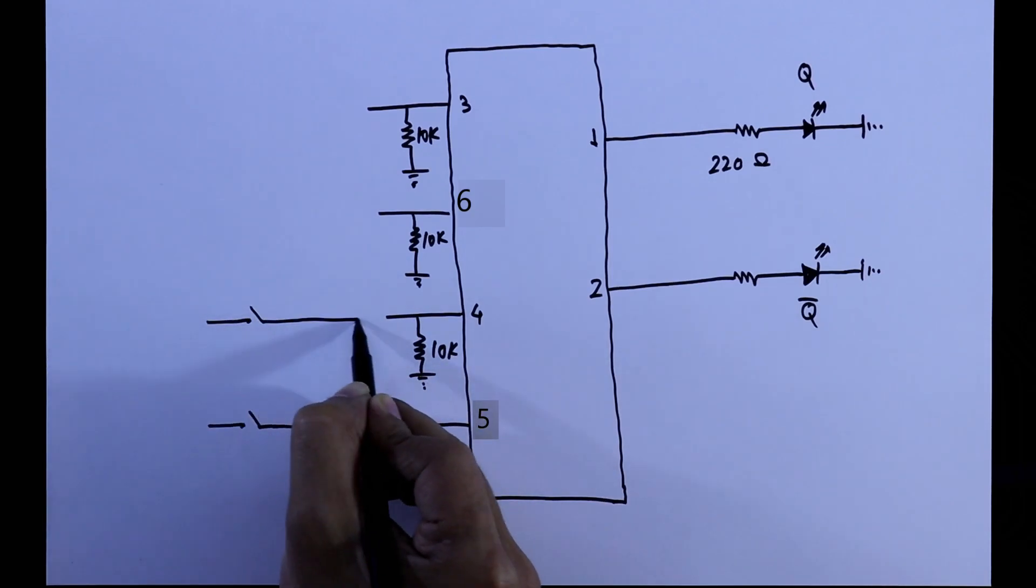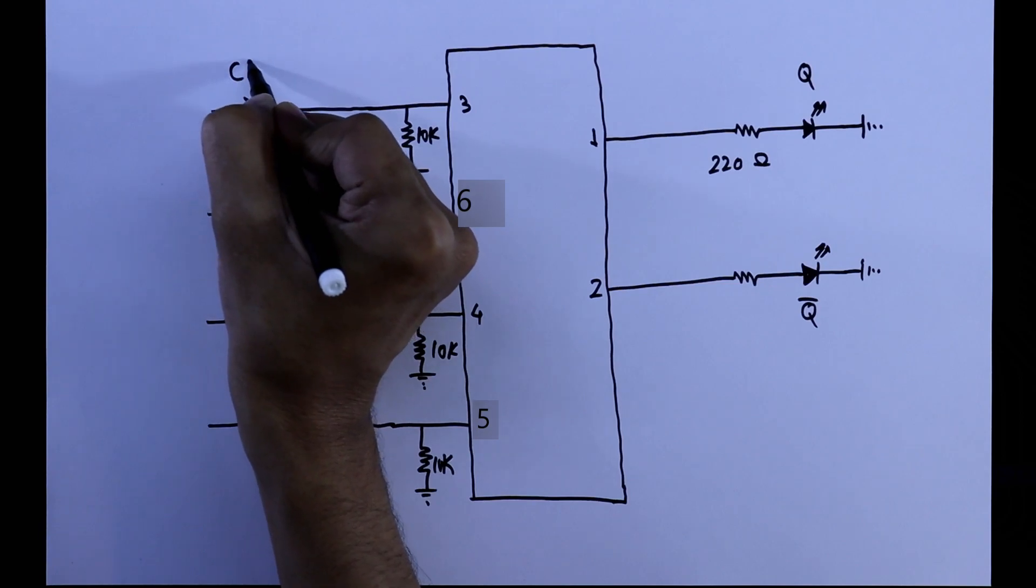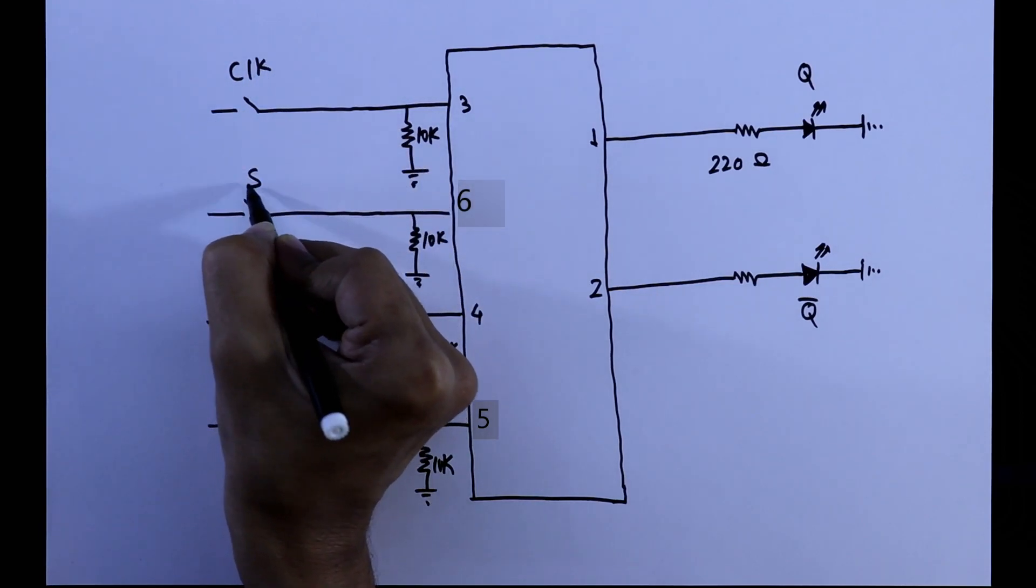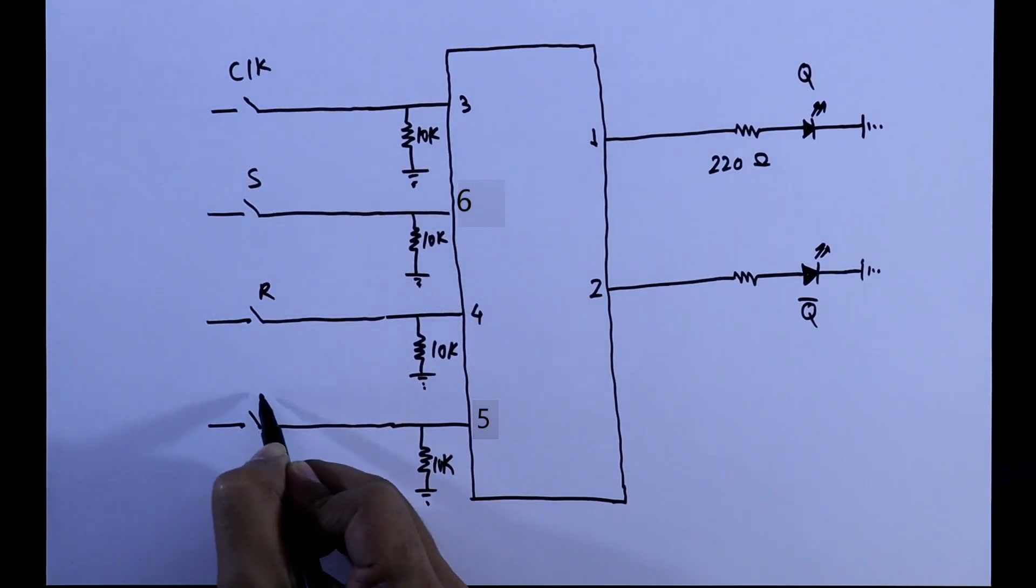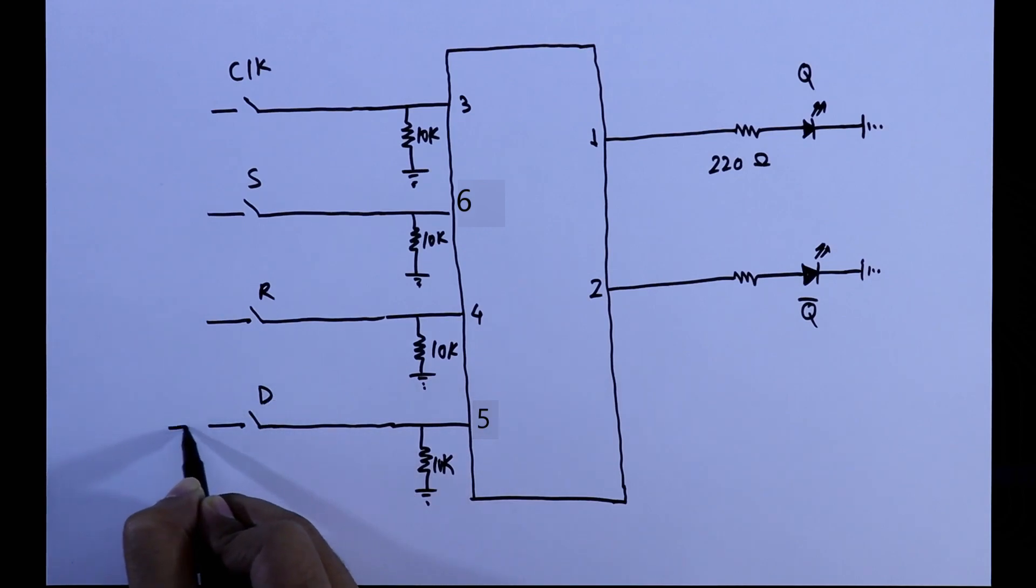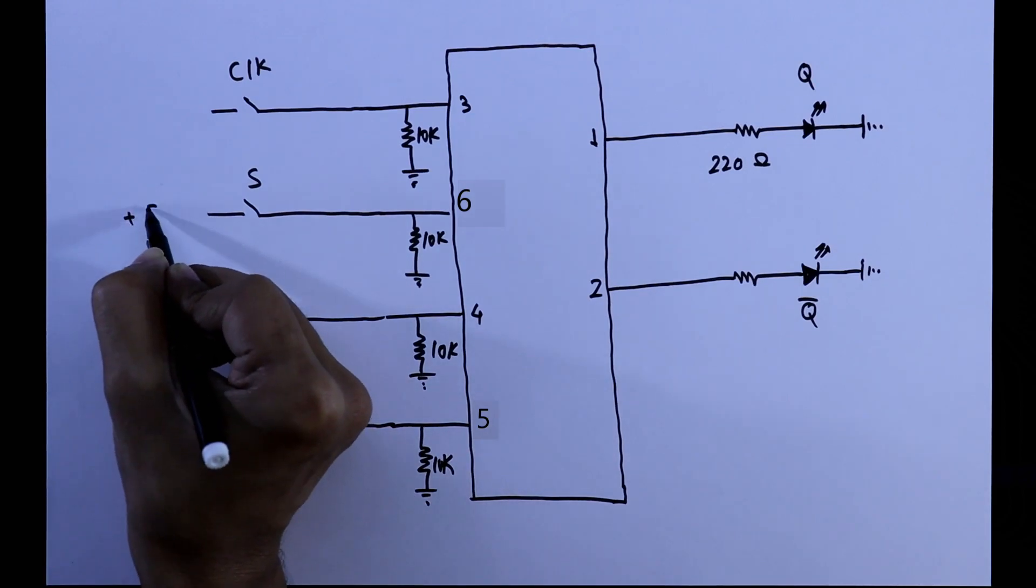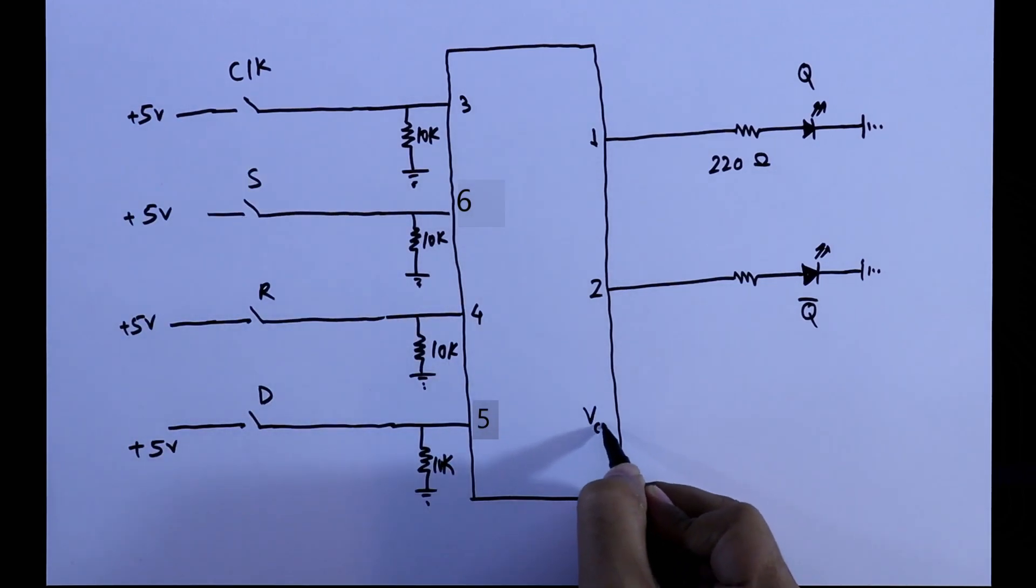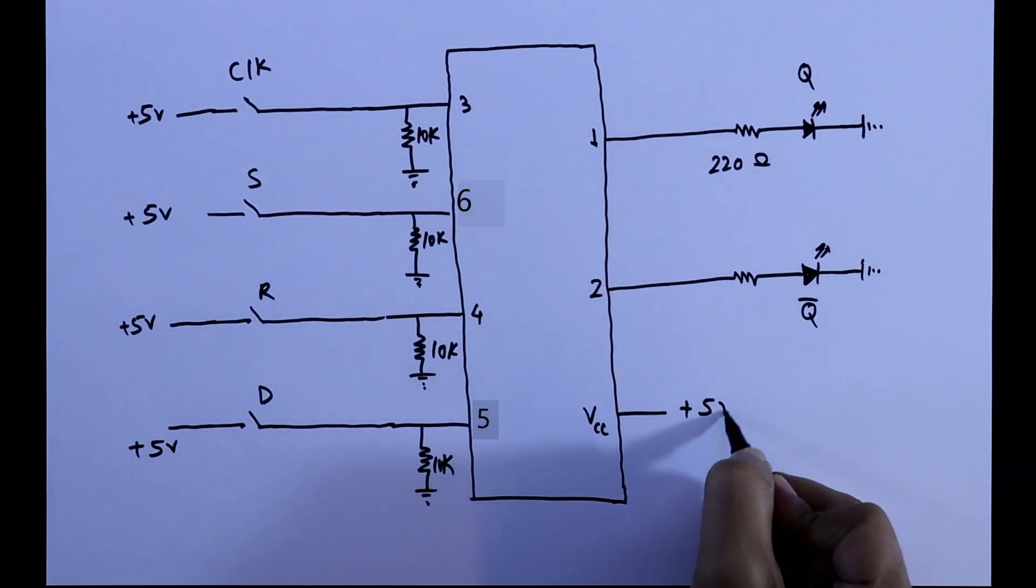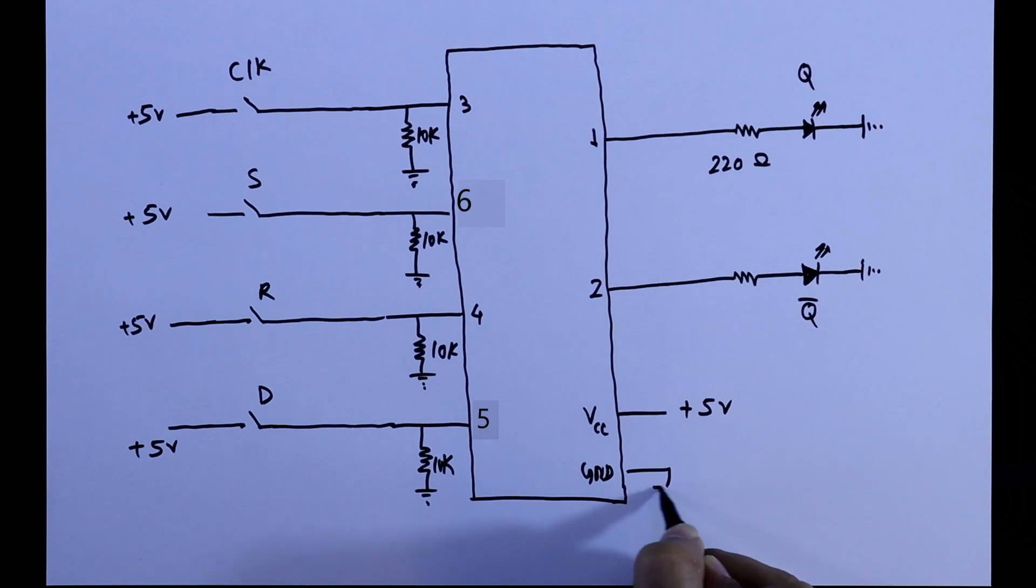This is input switch, it is clock, set, reset, data. And other pin of the switch is connected with plus 5 volt. I will connect VCC to the plus 5 volt, and here it is ground.